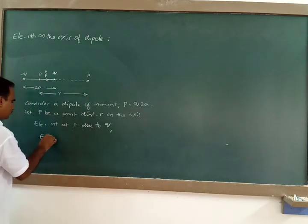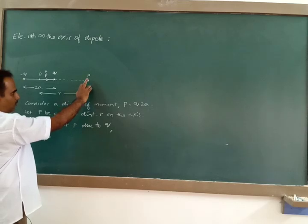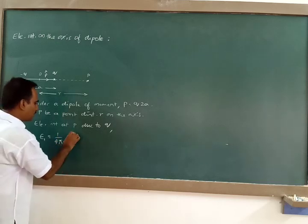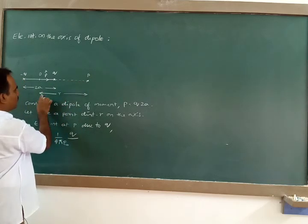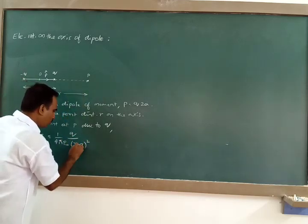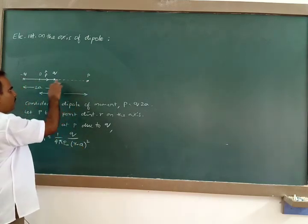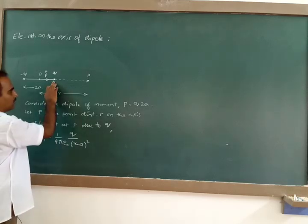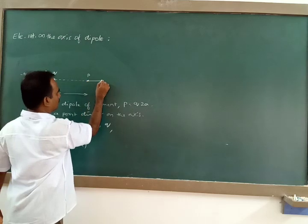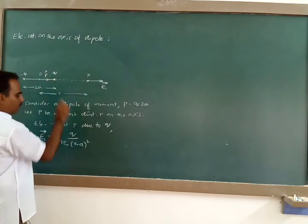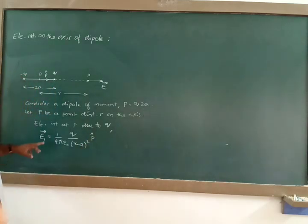First, consider the electric intensity E1 at P due to the positive charge Q. The magnitude of electric intensity at P due to Q is given by E1 = (1/4πε) × Q / (r − a)². The distance from the positive charge to point P is (r − a). Since this is a positive charge, the electric field at any point is directed away from the charge, so the direction of E1 is the same as the direction of P-cap.